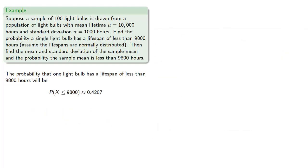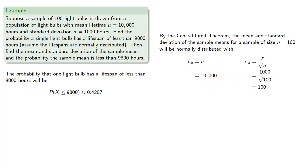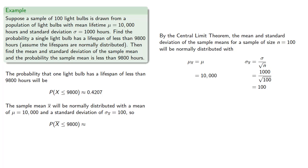By the central limit theorem, the sample mean for a sample of size n = 100 will be normally distributed with a mean equal to the population mean and a standard deviation equal to the population standard deviation divided by the square root of the sample size. Substituting in those values, the sample mean will be normally distributed with a mean of 10,000 and a standard deviation of 100.